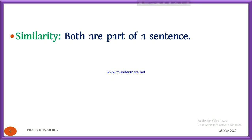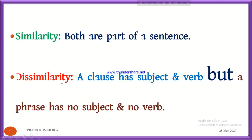So, what we have discussed so far: both clause and phrase are parts of a sentence — that is the similarity. In phrase and clause, we have similarity and at the same time we have dissimilarity. The similarity is that both are parts of a sentence. The dissimilarity is that a clause has a subject and verb, but a phrase has no subject and no verb.